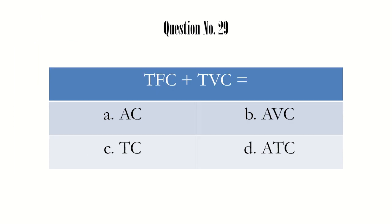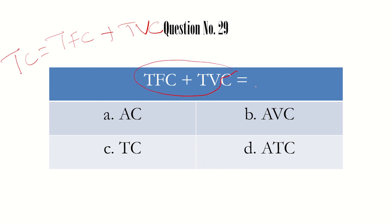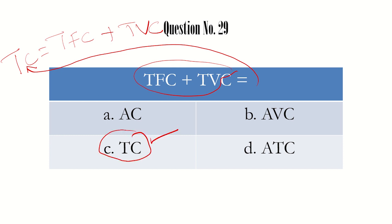Question number 29: TFC plus TVC equals what? We know that total cost is the summation of total fixed cost plus total variable cost. So TFC + TVC = TC, which is option C.